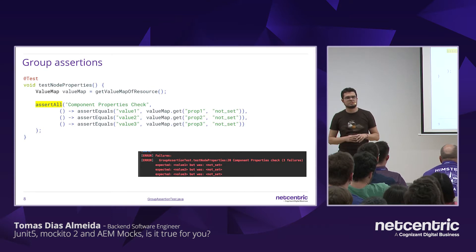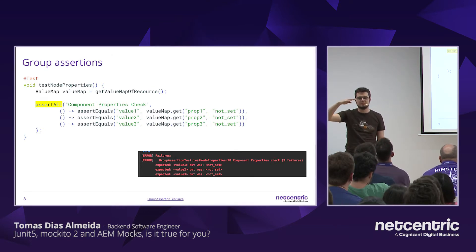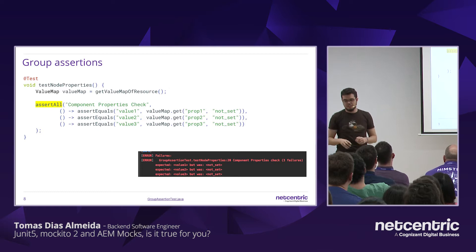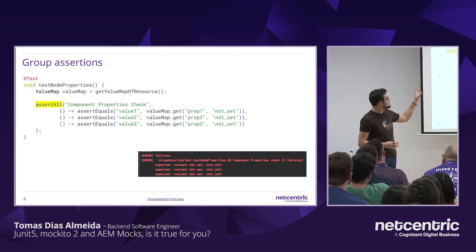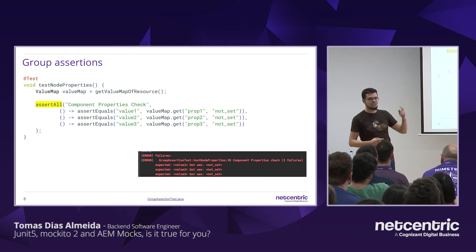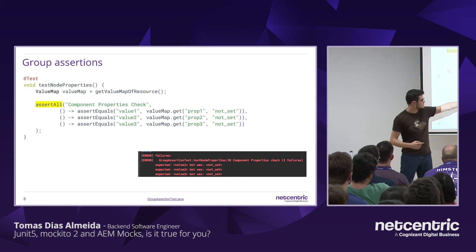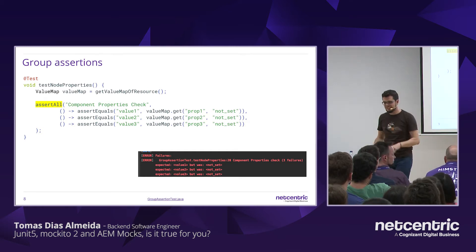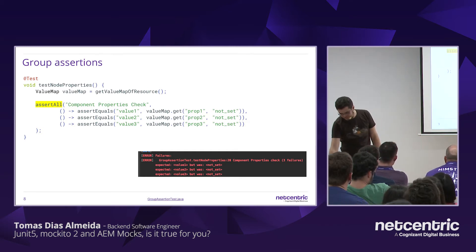Who has ever needed to verify each property of a component with assert1, assert2, assert3, assert4, and it fails on the first one, you fix it, then it fails on the second one, and so on? With assertAll, you just say: I want to test all the properties of my component, and you get one combined failure report with all the failing assertions listed. In my demo, since everything was unset, all three points failed at once.